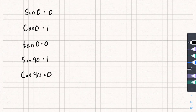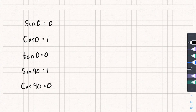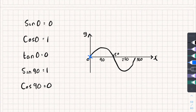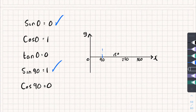Let me show you what I mean using graphs. On the x-axis we have angle in degrees and on the y-axis the output value. Here's a sketch of the sine graph, with 0, 90, 180, 270, and 360 marked. At the point 0 the y-value is 0, giving sine 0 equals 0. At 90 degrees it's at its highest point of 1, so sine 90 equals 1.